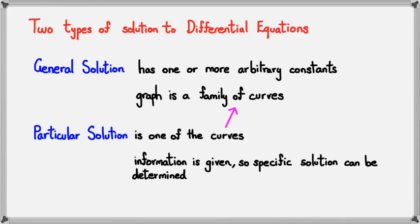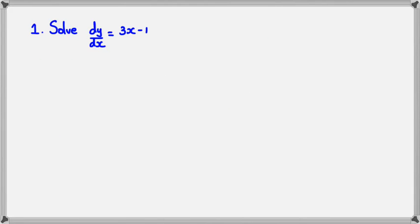Let's have a look at a couple of examples and see if we can get the hang of this. So here's the first example. Solve dy/dx equals 3x minus 1.